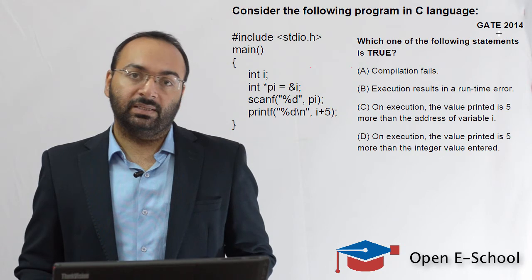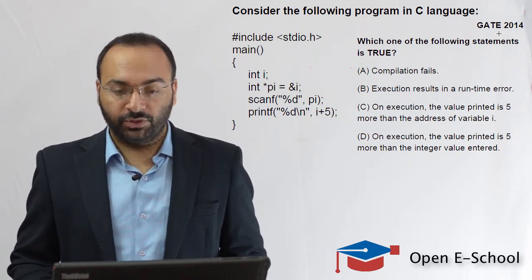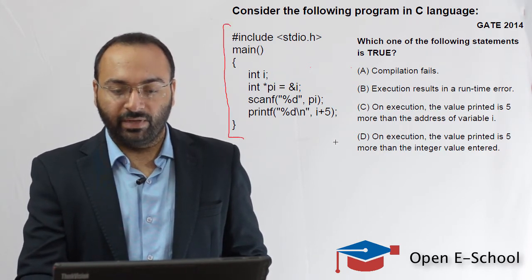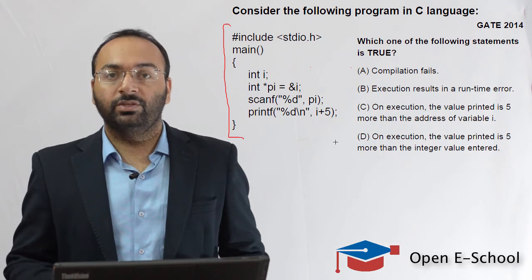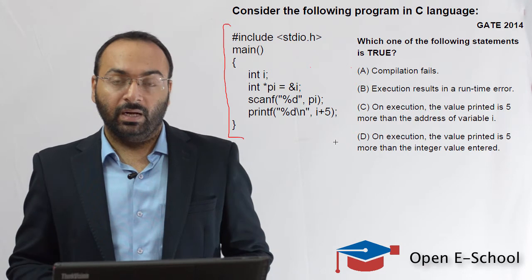In this video, we will discuss a question that was asked in GATE 2014. The question is, consider the following C program. We have been given a small C program and we have been asked to select one of the statements from the given four statements which is true regarding this program.